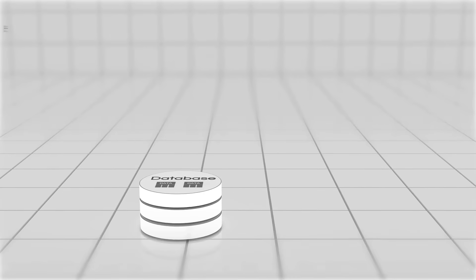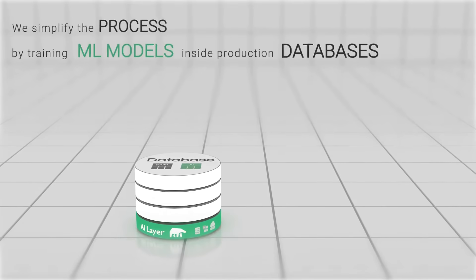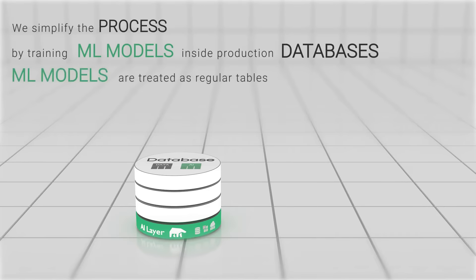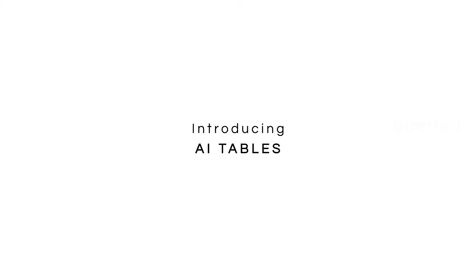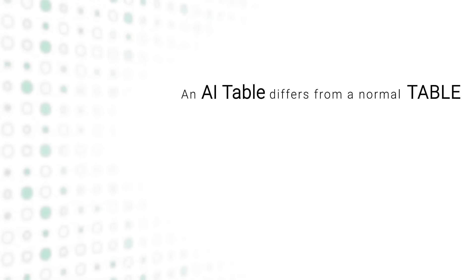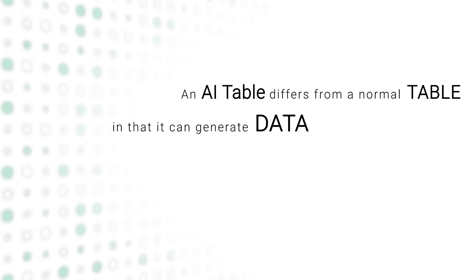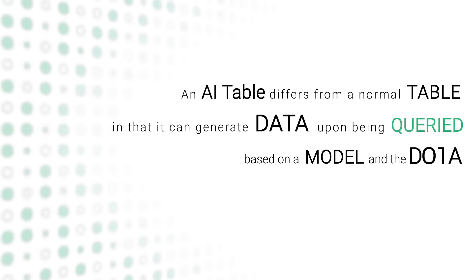We simplify the process by training ML models inside production databases. ML models are treated as regular tables inside the databases to provide forecasts using SQL queries. Introducing AI tables. An AI table differs from a normal table in that it can generate data upon being queried based on a model and the data contained in other tables.